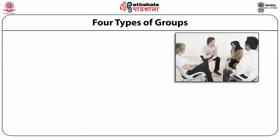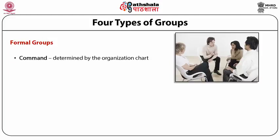Formal groups are more specifically in the nature of command groups or task groups. Command groups are determined by the organization chart, while task groups are where members work together to complete a specific task or job assigned to them. So basically, command groups and task groups are types of formal groups.